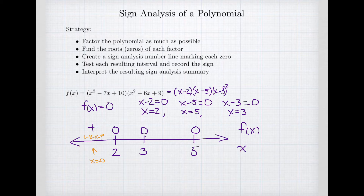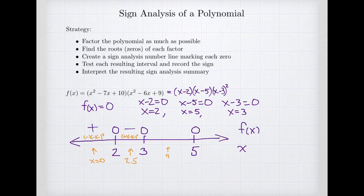Next I think about a point between 2 and 3 — for example, 2.5. Putting 2.5 in, I get a positive times a negative times a negative squared. There are three negatives, so the overall sign of that interval is negative. Then for a point between 3 and 5, maybe x equals 4: 4 minus 2 is positive, 4 minus 5 is negative, 4 minus 3 is positive and squared. I get a positive times a negative times a positive squared — one negative — so I get a negative sign on that interval.